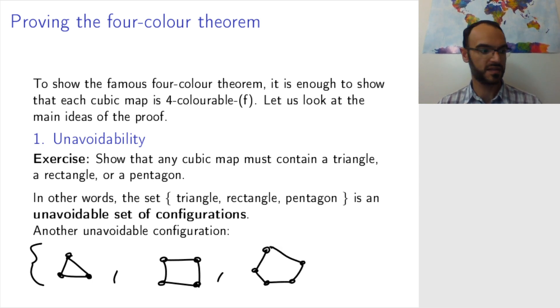has to be adjacent to either another pentagon or a hexagon or a hexagon. So pentagon adjacent to a hexagon. So that's another unavoidable set of configurations.